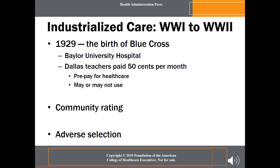As this idea caught on, 25 states enacted laws permitting Blue Cross to operate as a charitable foundation and waived the normally significant financial reserves required of insurance companies. Other organizations across the United States emulated the plan, and ultimately sister organizations known as Blue Shield provided similar coverage for physician services. The Blues, as they were called, continued to insure millions of Americans using community rating through late in the 20th century.